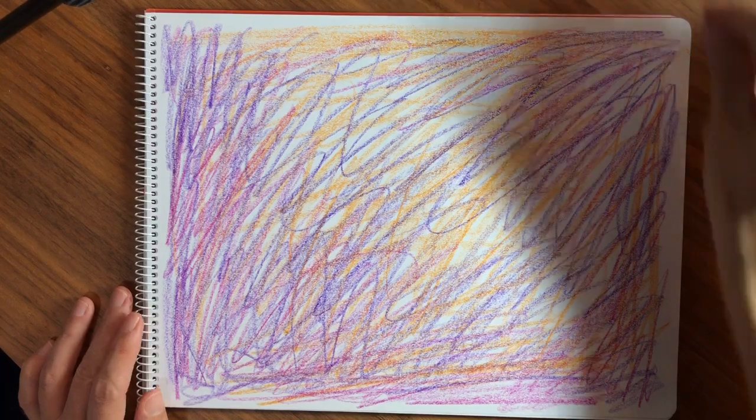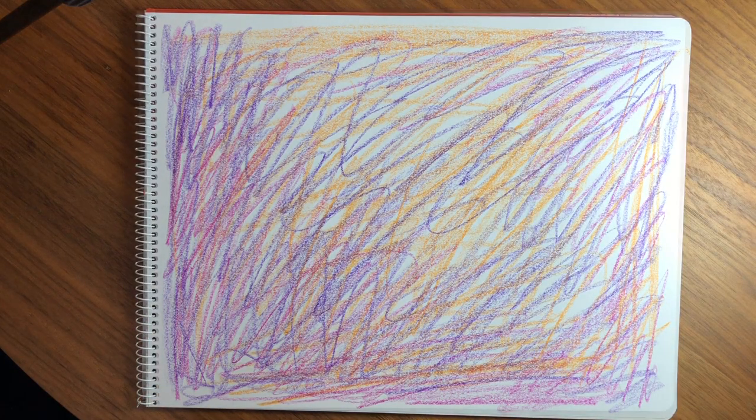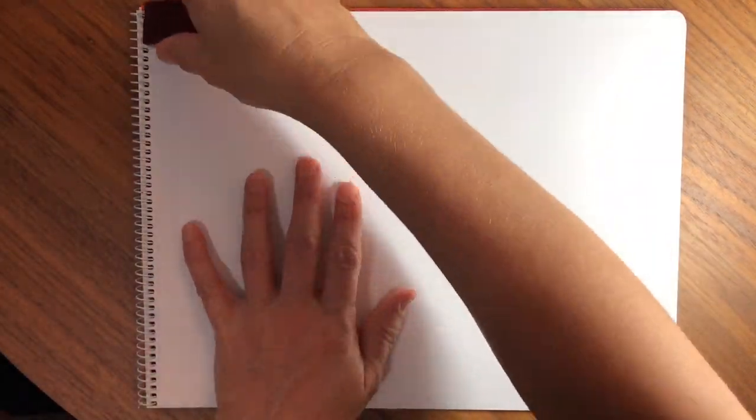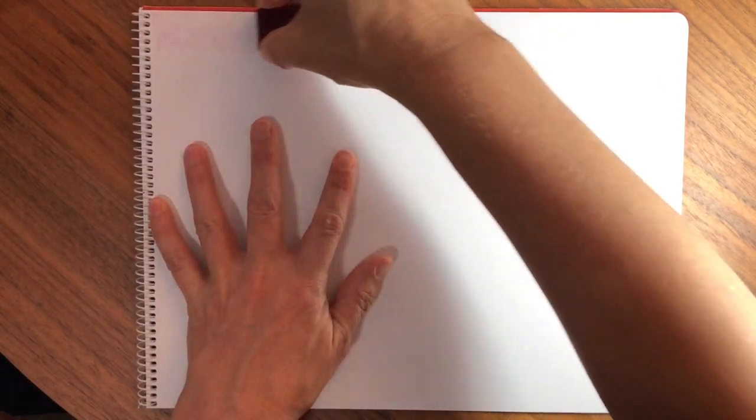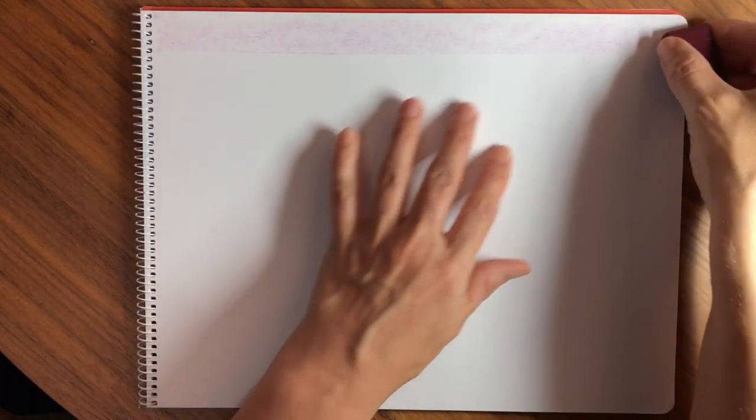And now that we've gotten out all of our scribbles, we're ready to do a real form drawing. Today we're going to draw things with straight lines and curves.